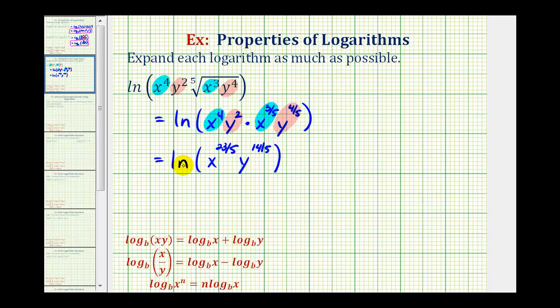Now notice how we have natural log of a product. So we can expand this further using the product property of logarithms given here. This is going to be equal to natural log of x to the twenty-three-fifths plus, because we have a product, natural log y to the fourteen-fifths.